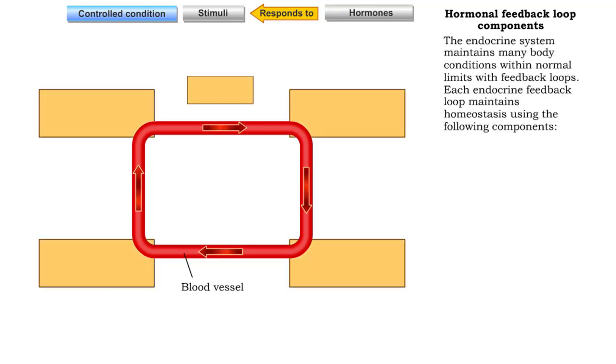The endocrine system regulates many body conditions with feedback loops. Each feedback loop has the following components.